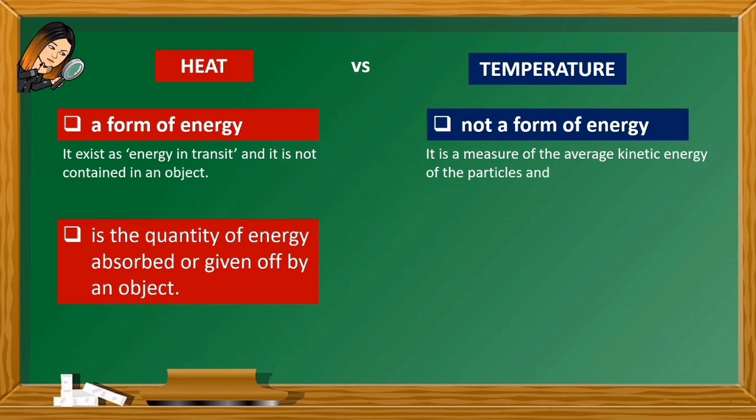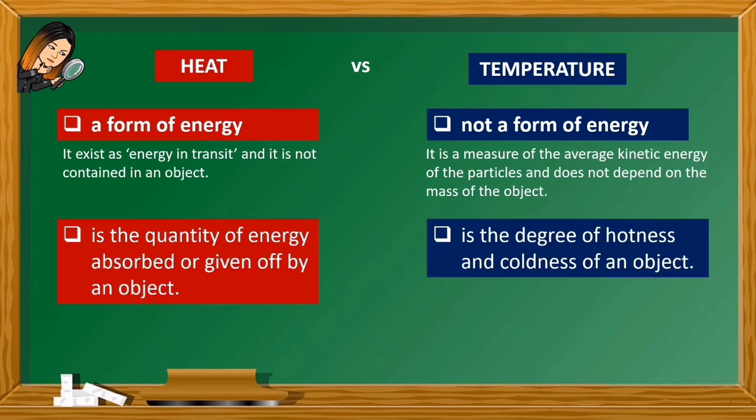Temperature, on the other hand, is not a form of energy. It is a measure of the average kinetic energy of the particles and does not depend on the mass of the object. Temperature refers to the degree of hotness and coldness of an object.